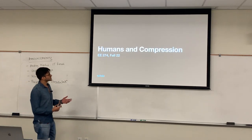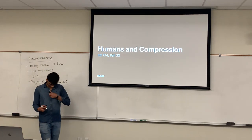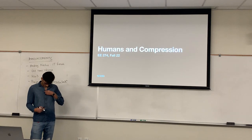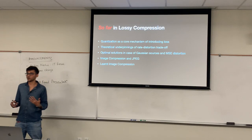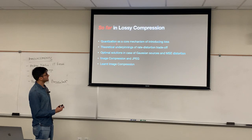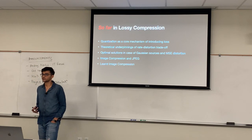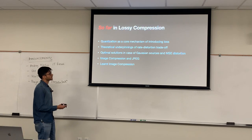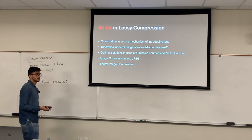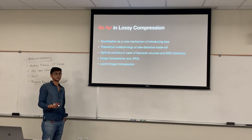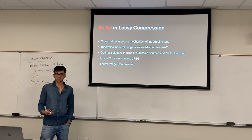Today's lecture is titled vaguely for a reason — it's going to be around humans and compression, slightly different from what we've been doing so far. We have covered a lot of ground in lossy compression: how quantization acts as a core mechanism for introducing loss, the rate-distortion trade-off from Saki's lecture, optimal solutions for Gaussian sources with mean square error distortions via transform coding, how JPEG works, and last class, how learned image compression techniques work.